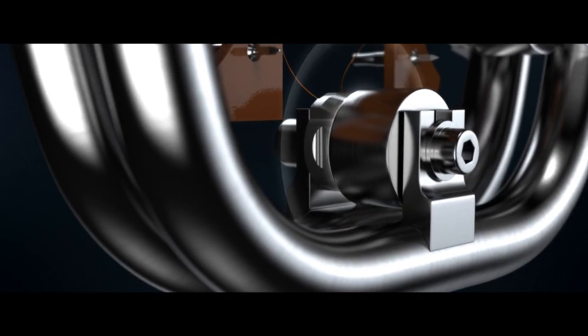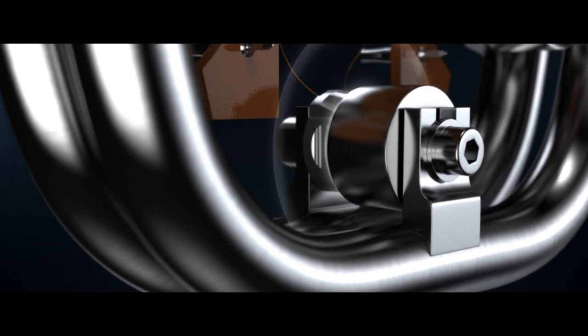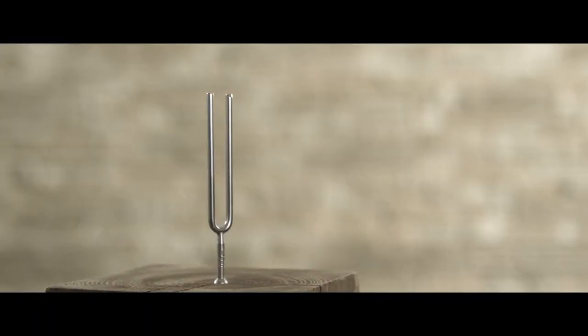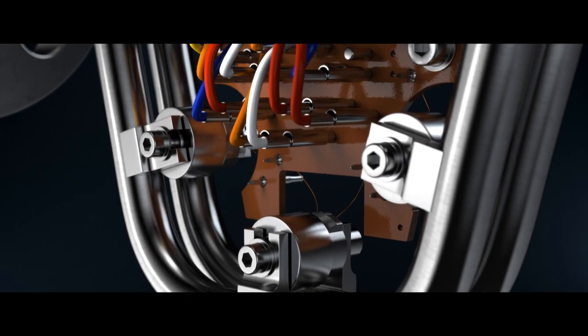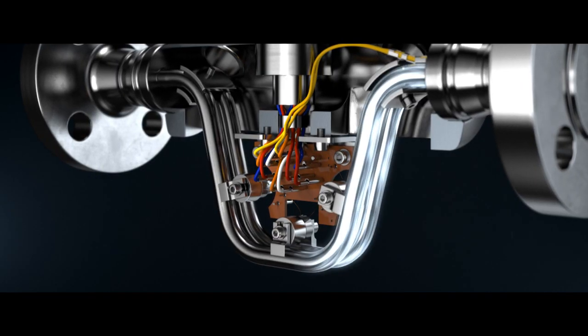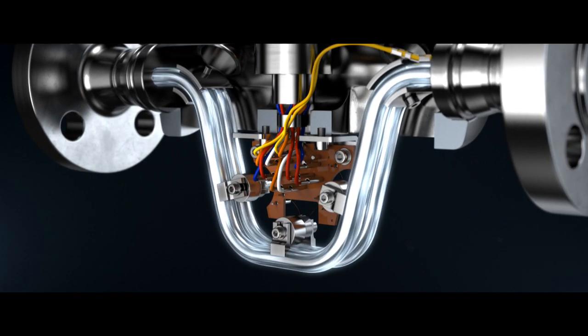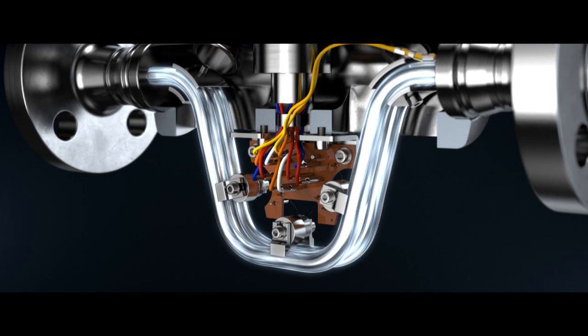The tubes oscillate with a resonance frequency, similarly to a tuning fork. The oscillation is measured precisely by two pickups at the inlet and outlet sections. If liquids or gases now flow through the tubes, a phase shift occurs.